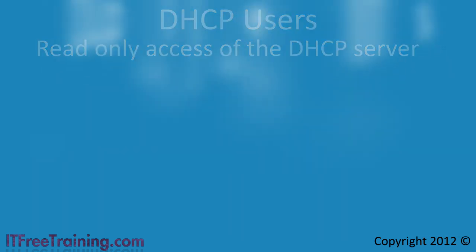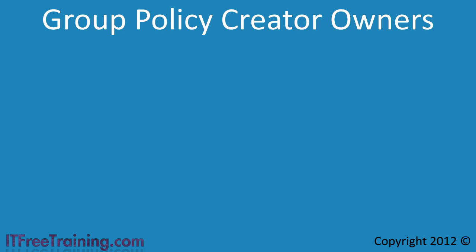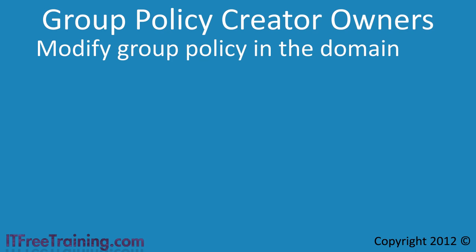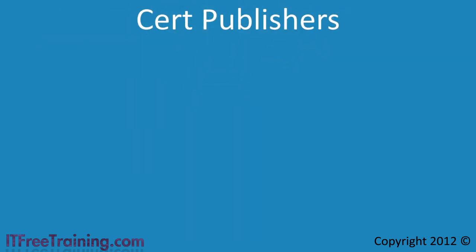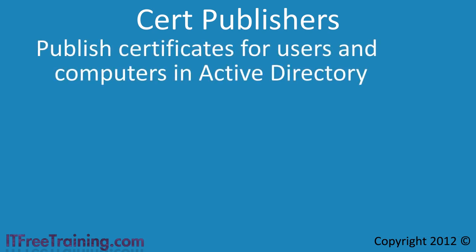The next group is Group Policy Creator Owners. This group allows users to modify group policy in the domain. The administrator is automatically a member of this group. The group has a lot of power so you should be careful whom you add to it. The next group is Cert Publishers. Members of this group can publish certificates in Active Directory for users and computers. If you have a certificate authority on the network or have purchased certificates, members of this group can store the certificate in Active Directory for use with a particular user or computer.